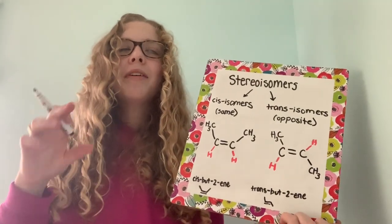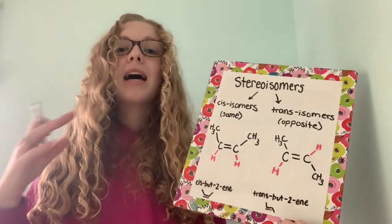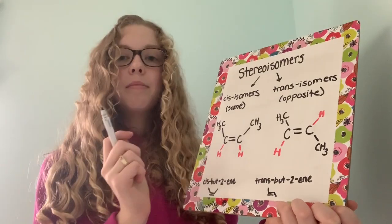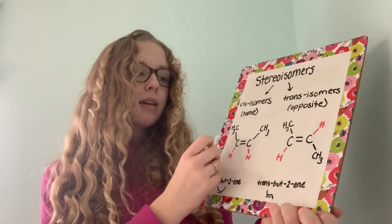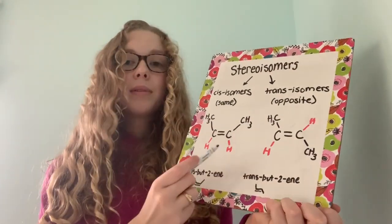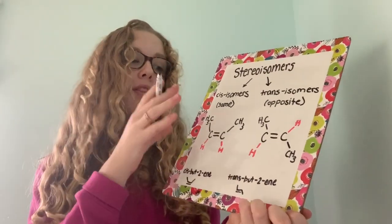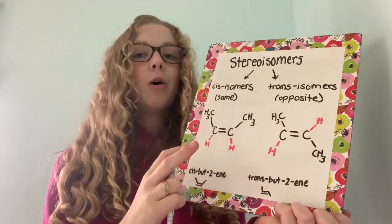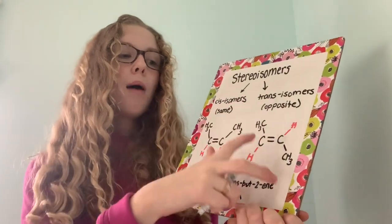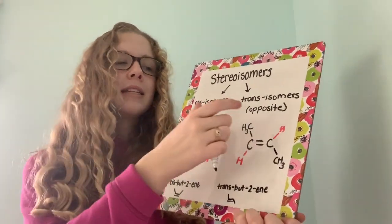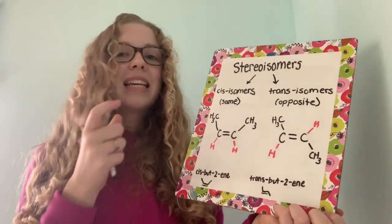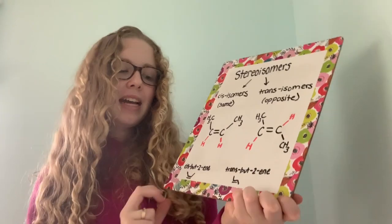Stereoisomers are just molecules that have the same chemical formula but a different arrangement of the atoms. Now cis means same, so the two molecules that are important — in this case methane trumps hydrogen — so we're focusing on the methane and which side of the double bond it falls. If they're on the same side it's called cis, and if they're on opposite sides it's called trans. Trans actually means across, so that's how you can remember that. And cis sounds like sisters, so they'll be on the same side.